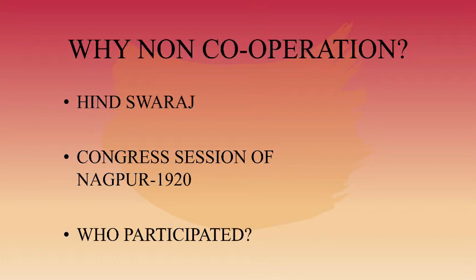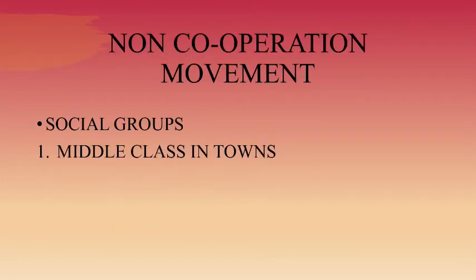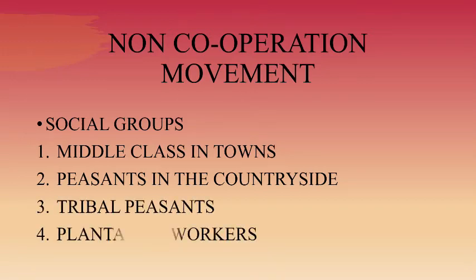Various social groups participated in the movement for their own specific purposes. The different groups that participated in the Non-Cooperation Movement were: the middle class in towns, peasants in the countryside, tribal peasants, and plantation workers. Let us now discuss one by one why these groups participated in the movement and how they fought.